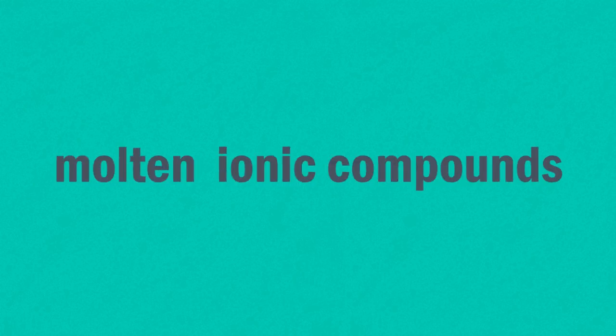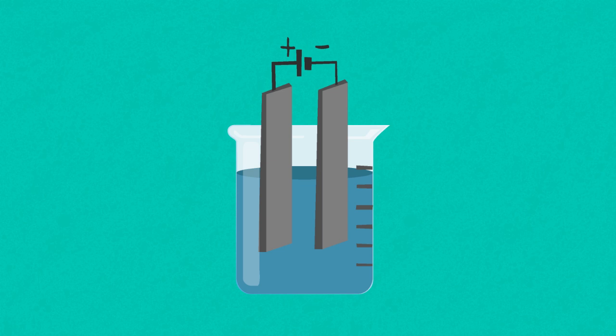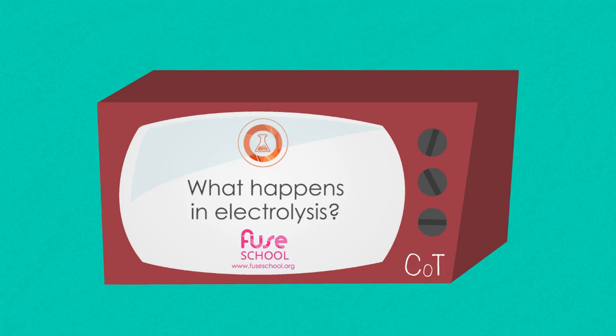This lesson looks at examples of molten ionic compounds and how they can be used in electrolysis. Before going any further, you'll need to know what electrolysis is and you may wish to refer to our lesson What Happens in Electrolysis.